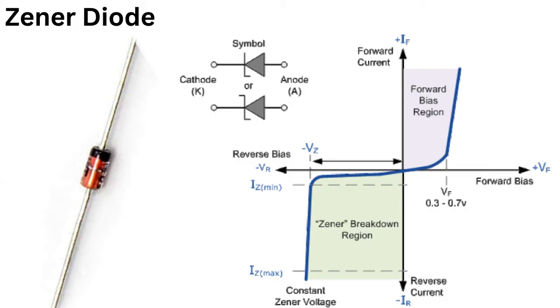When a Zener diode is connected in reverse bias, it behaves like a normal diode until the voltage across it reaches a certain point known as the Zener voltage or VZ.